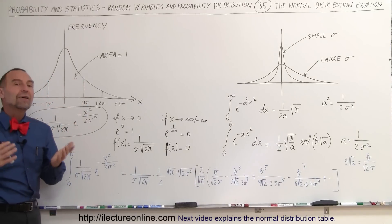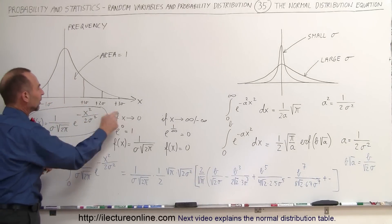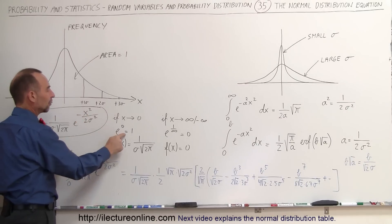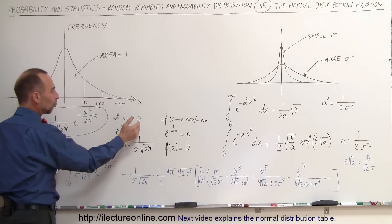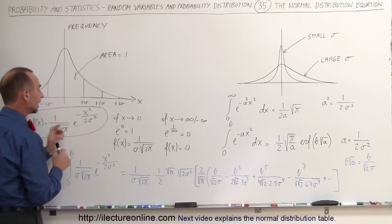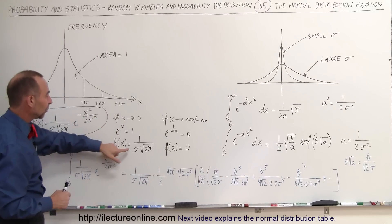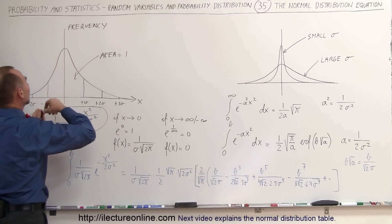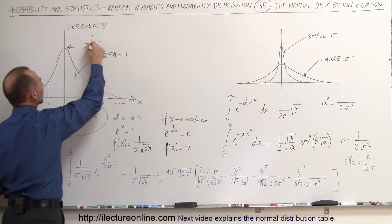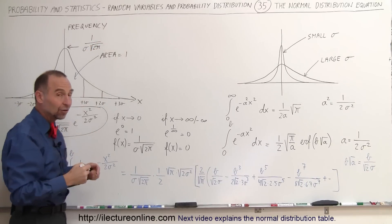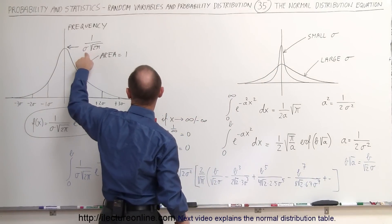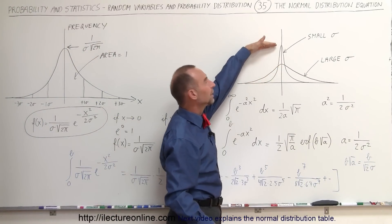Let's play around with some values for x. When x equals 0, e to the 0 power is equal to 1, and therefore the function simply becomes 1 over sigma times the square root of 2 pi — which is the number in front of the e to the x function. So when x equals 0, the vertical axis equals 1 over sigma times the square root of 2 pi. It doesn't matter what the value of sigma is — the top of the peak always equals that value. That's why when sigma is big the peak goes lower, and when sigma is small the peak goes higher.